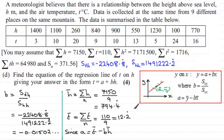So if we now put our values in, we therefore have that a is equal to the mean of t, which was 12.2 recurring. And then minus b times h bar, we've seen over here, is minus 0.01502, and so on.